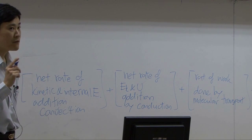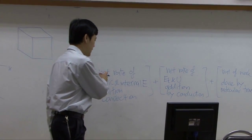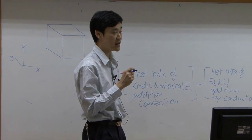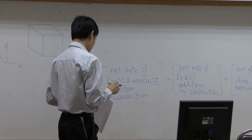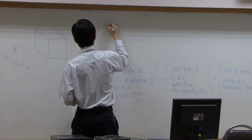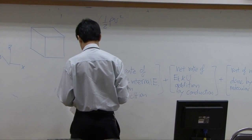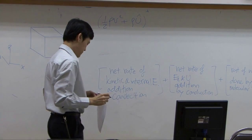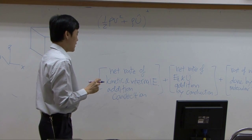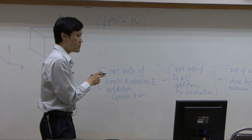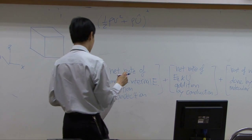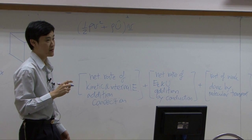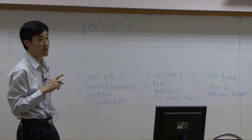If you look into each term, the first term is the rate of kinetic and internal energy added to the system. Kinetic energy is 1/2 rho v squared. Internal energy is rho u. You add them by means of convection, so it must be multiplied by velocity. This one we already derived from the very beginning of our class.